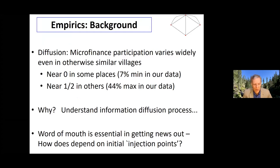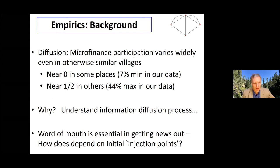We were working with a bank that was trying to get out loans in rural India, and they were getting different types of participation in different areas. In some villages they would go into, they would get almost no participation, and in other villages they would get very large participation. They were working by word of mouth, so information was spreading via the networks. One question we had was: can we understand why they're having very different outcomes in otherwise very similar villages, and how did that depend on who they were informing and trying to get to spread the information?